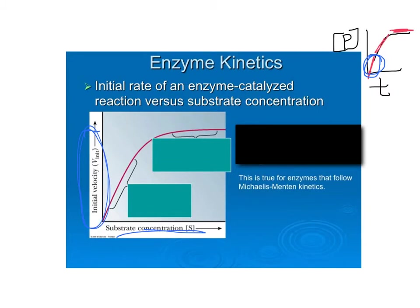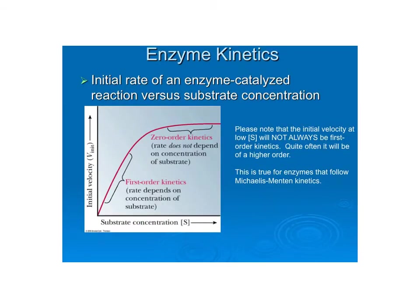You start with zero because if you have no substrate you can't have a reaction. The rate increases with respect to substrate concentration and then it peters off. When it peters off, it becomes zero order with respect to substrate because every binding site on the enzyme is full. The only way to make it faster is to add more enzyme. At lower concentrations, not every binding site is occupied, so adding substrate makes it go faster and faster.